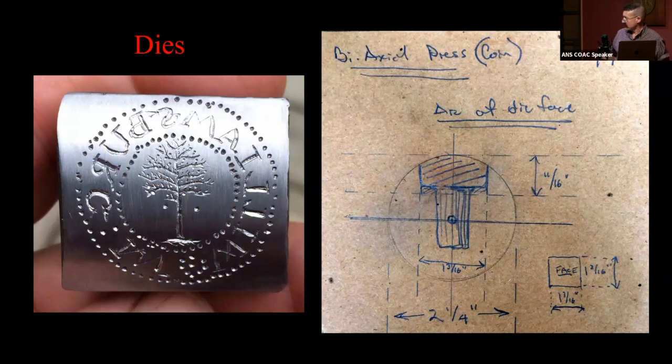This is basically the cross-section of the die. It's kind of a square-top mushroom. Very, very simple.